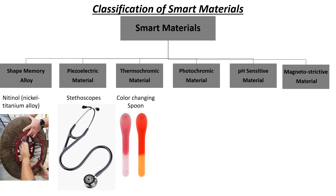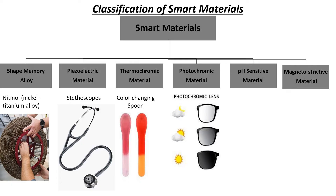Now let's move to photochromic materials. Photochromic materials change their color in response to light, typically ultraviolet light. These materials adapt to varying light conditions, becoming darker when exposed to bright light and returning to a clear state in lower light conditions. For example, photochromic lenses used in transition glasses — these lenses darken when exposed to sunlight or UV light and become clear again indoors or in low light, making them ideal for eyewear that adjusts to changing light conditions, providing both vision correction and protection from bright sunlight.